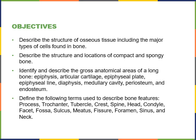Describe the structure and locations of compact and spongy bone. Identify and describe the gross anatomical areas of a long bone: epiphysis, articular cartilage, epiphyseal plate, epiphyseal line, diaphysis, medullary cavity, periosteum, and endosteum.